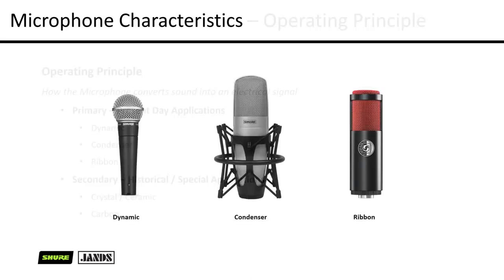Let's cover off dynamic, condenser, and ribbon microphones. On the left is a dynamic, usually in a handheld format, primarily used for stages. We then have condenser microphones which tend to sit on a shock mount — the first thought is generally the studio scenario, capturing a wider range of frequencies. And then we also have the ribbon style microphone. It's worth noting that these specific images don't necessarily mean it's going to be that type — we can have handheld condenser microphones and shock-mounted dynamic microphones as well.